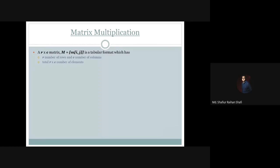A matrix-er dimension suppose r into c — eta mane, a matrix-tate number of rows-er shongkhha hoche r, ebong number of columns-er shongkhha hoche c. Akta matrix-er dimension theke amra information pete pari je matrix-tate ki ki parimaan element hold korche. Jodi dimension r into c hoi, tahole total element-er shongkhha hoche r multiplied by c. Matrix-er element-ke amra m(i,j) aakare prokash korte pari.